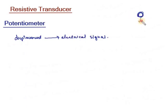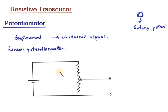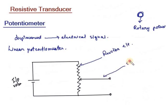This is the rotational potentiometer, which is also called a rotary potentiometer. Let's look at the linear potentiometer. This is the diagrammatic representation of the linear potentiometer. Here we have given the input voltage. This is called the resistive element. This is the sliding contact, also called the wiper.